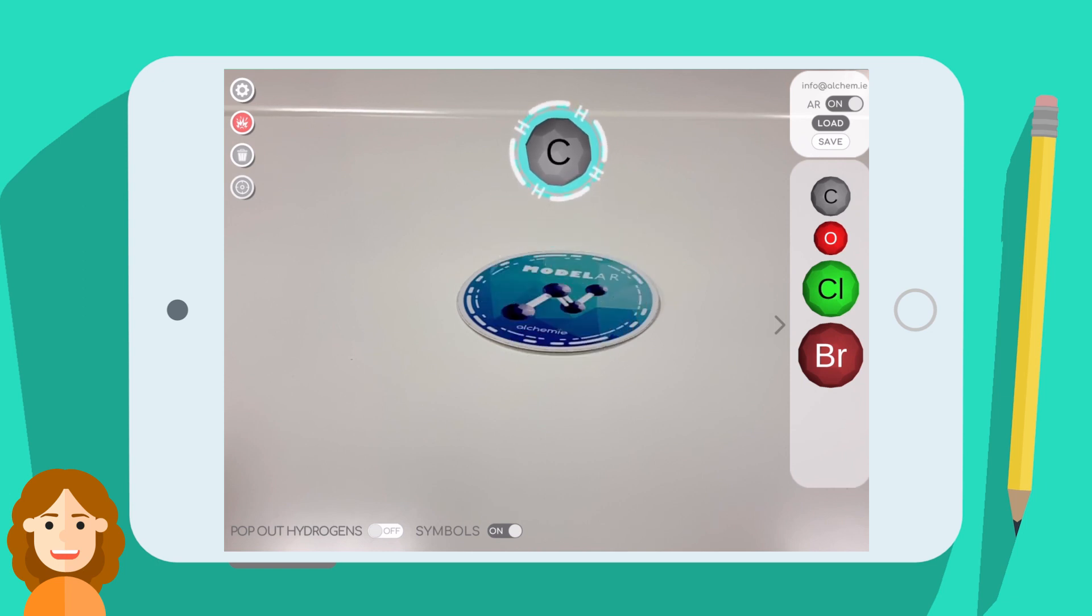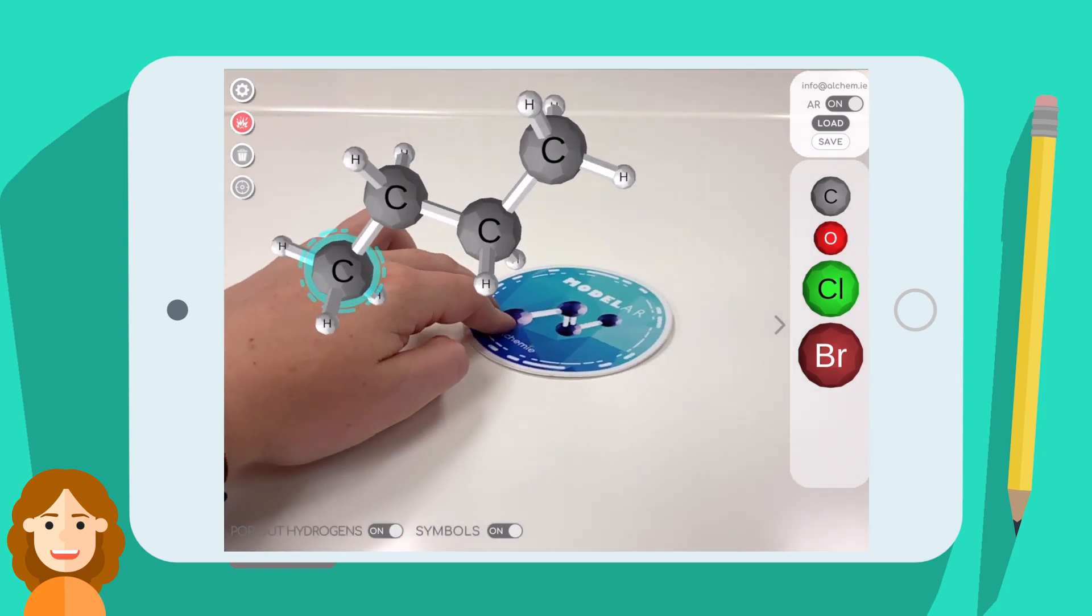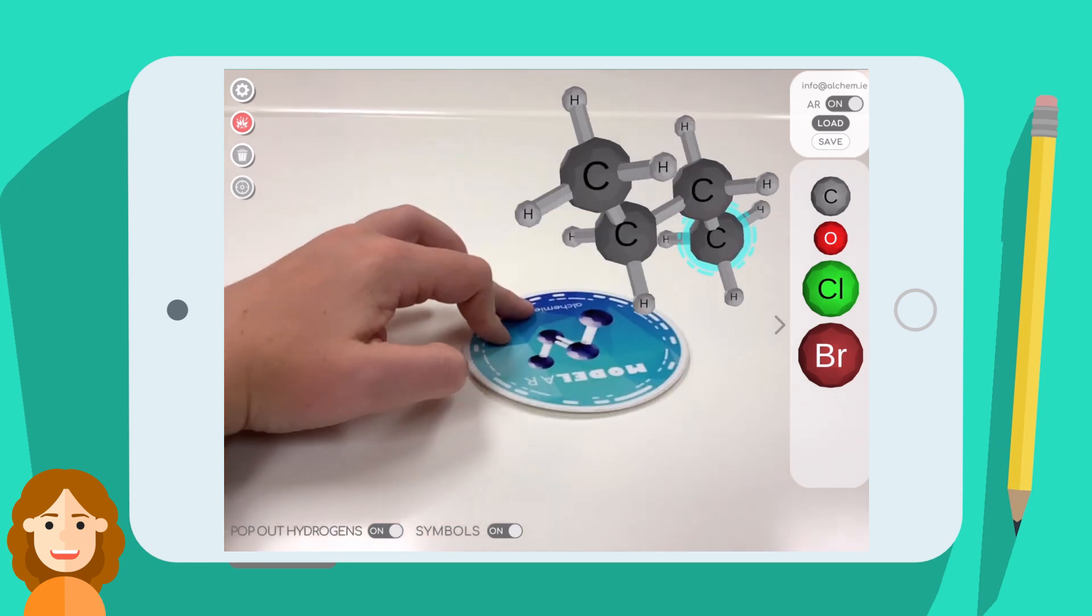You can do everything in AR that you can do in the regular mode, including add on to your molecule and rotate bonds as well as the molecule. You can even rotate the molecule by moving the tag or walking around it.